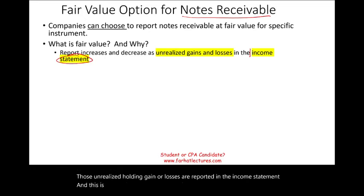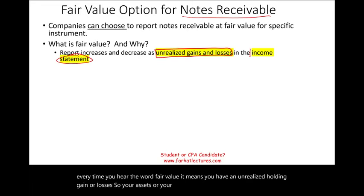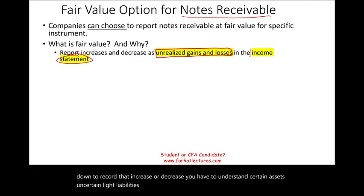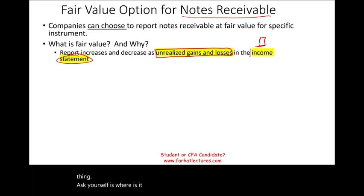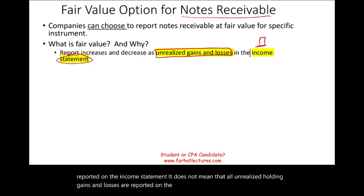This is extremely important. Every time you hear the word fair value, it means you have an unrealized holding gain or loss — your assets or liabilities either went up or went down. To record that increase or decrease, you need to understand that certain assets and liabilities are reported on the income statement in terms of gains and losses, while others are reported on the balance sheet. Notes receivable is reported on the income statement, but not all unrealized holding gains and losses are — others are reported in the equity section of the balance sheet.